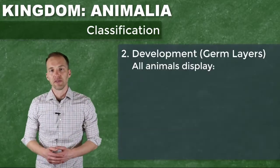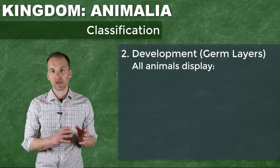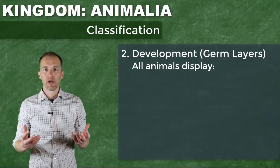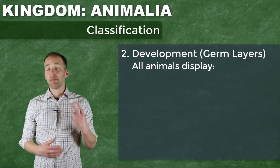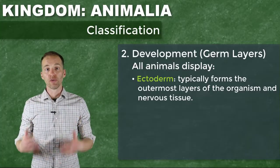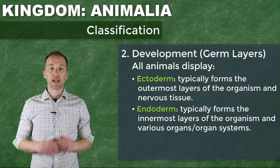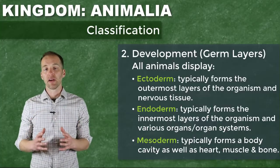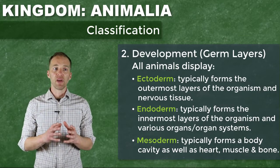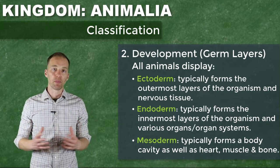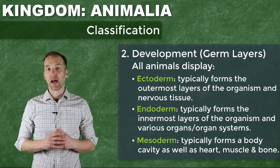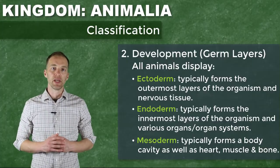The next thing we're going to look at is development — specifically, how many tissue layers does the organism develop through its embryonic stage? All animals have at minimum two: the ectoderm, which develops into the outer coverings, and the endoderm, which develops into the inner coverings. As we get more complex, there's a mesoderm, a middle layer that develops into a body cavity. Some organisms have a full body cavity and some have a partial body cavity, and this helps us classify them into different groupings.